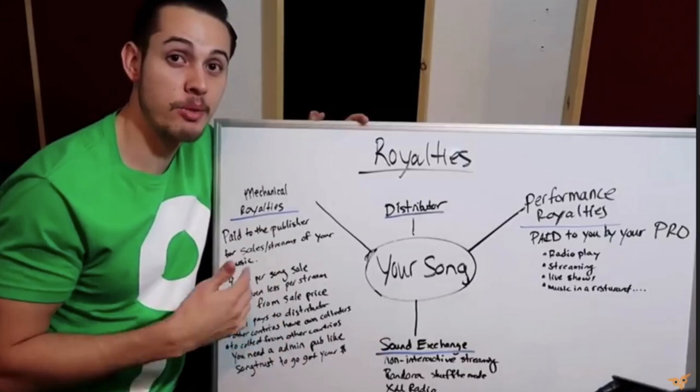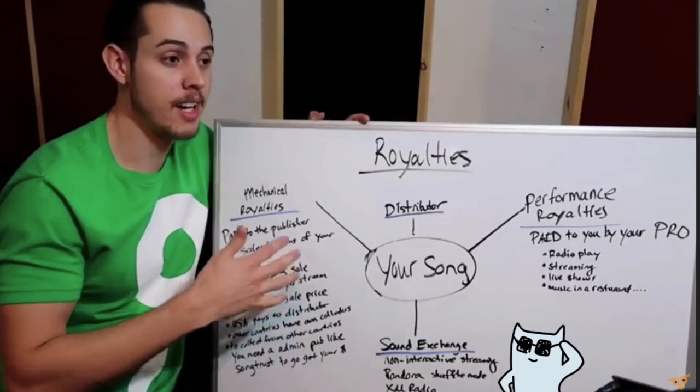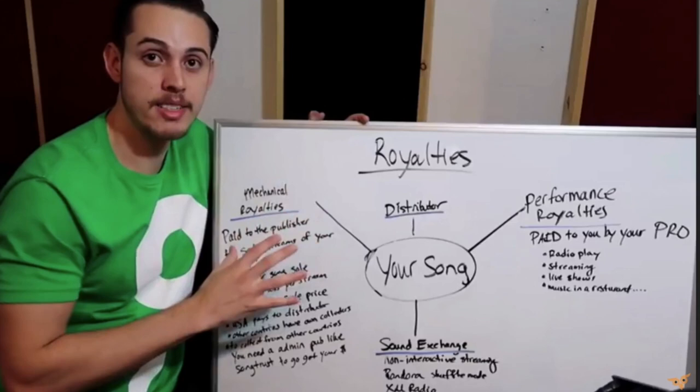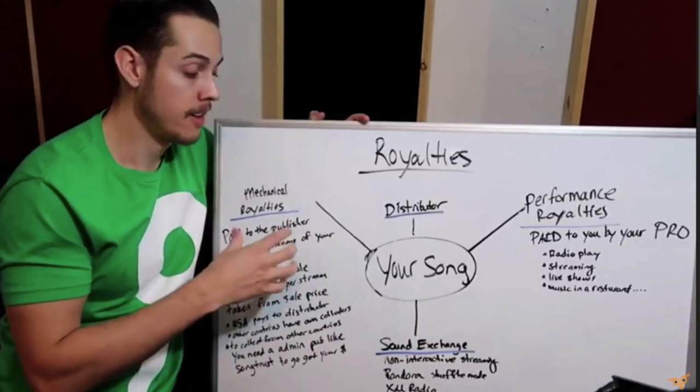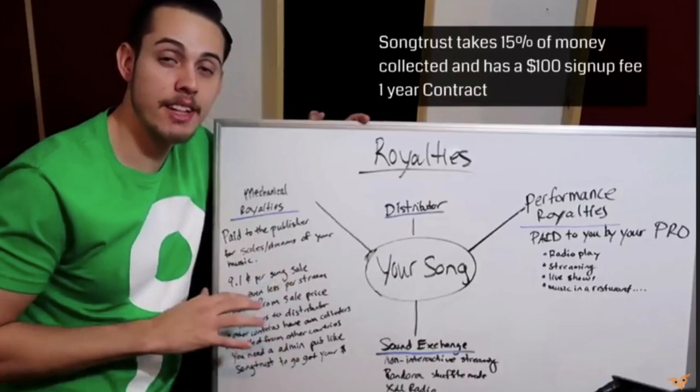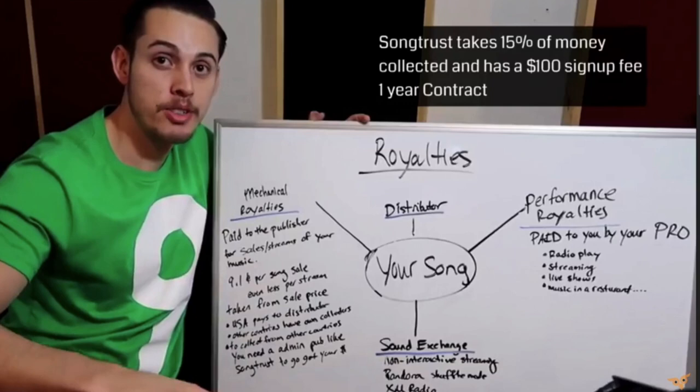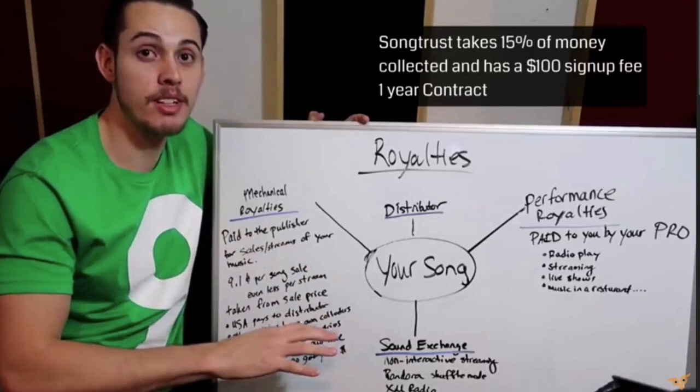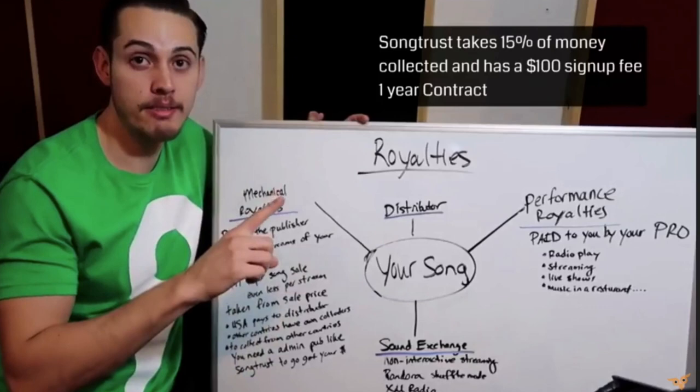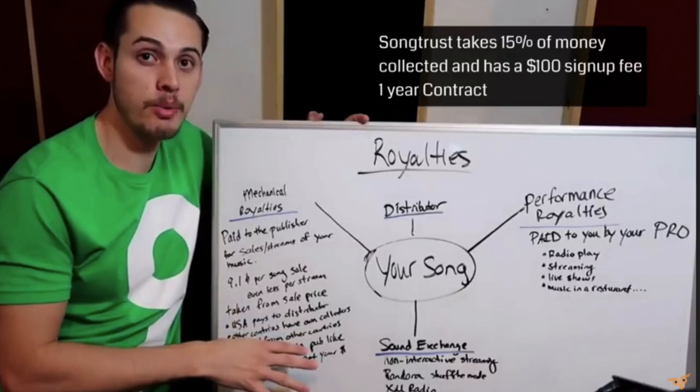Let's talk about publishing administration and whether you'd actually want to do it. A publishing administrator is something like SongTrust, which is highly recommended by BMI, DistroKid, and others as a way to collect your mechanical royalties paid to the publisher overseas. SongTrust doesn't take any of your publishing — they simply administer it and you keep 100% of your publishing ownership. It's not a co-publishing deal; it's administration only.